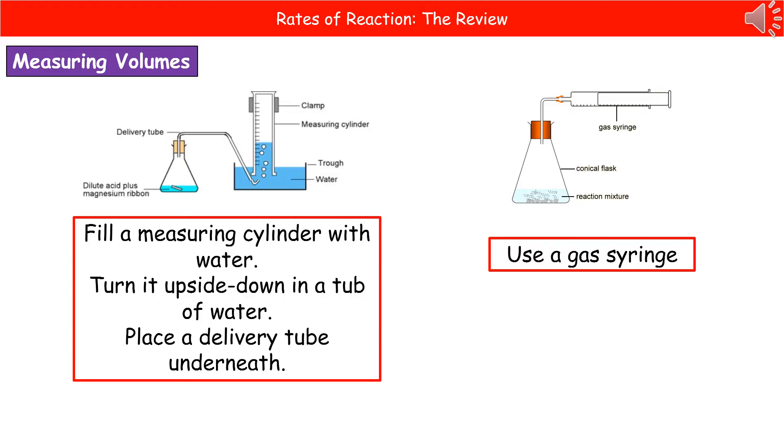In all likelihood, that's the way they would give you as an example method on the exam paper, because they would like to ask you a follow-up question on how we could improve the recording of the volume of gas. And the answer to that question is to use a gas syringe, which is shown on the right there.